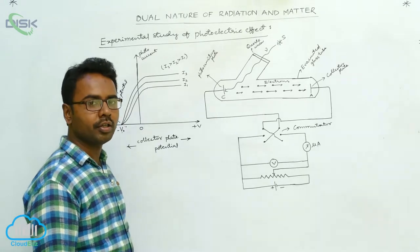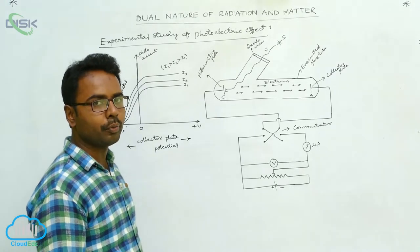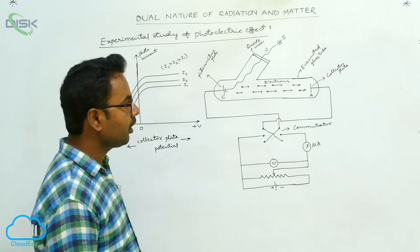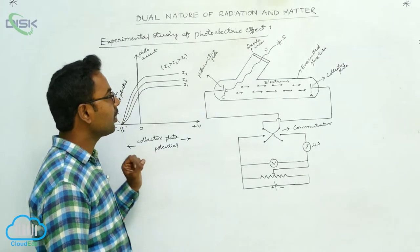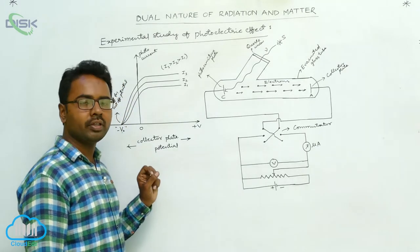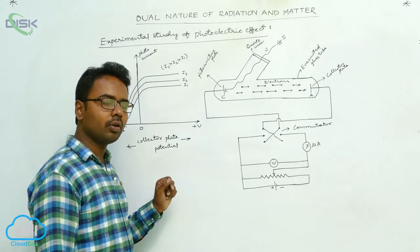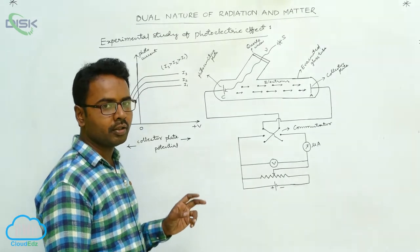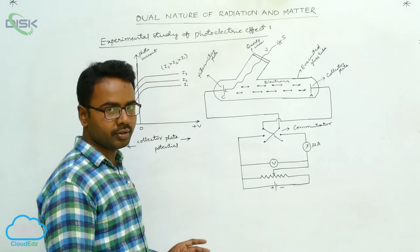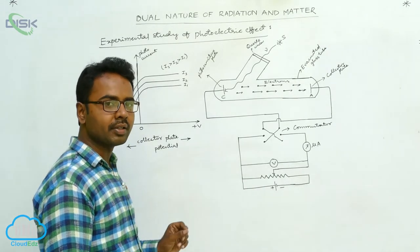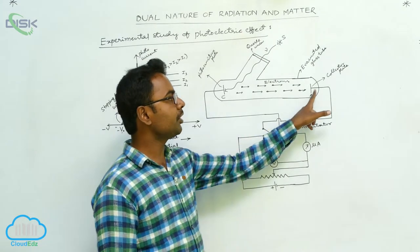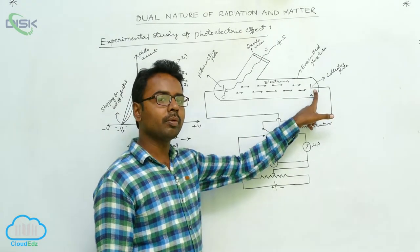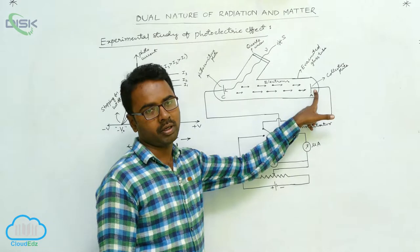Here we are going to study the effect of potential of collector plate on photocurrent. We study this in two cases: when we apply positive potential to the collector plate, and when we apply negative potential to the collector plate.